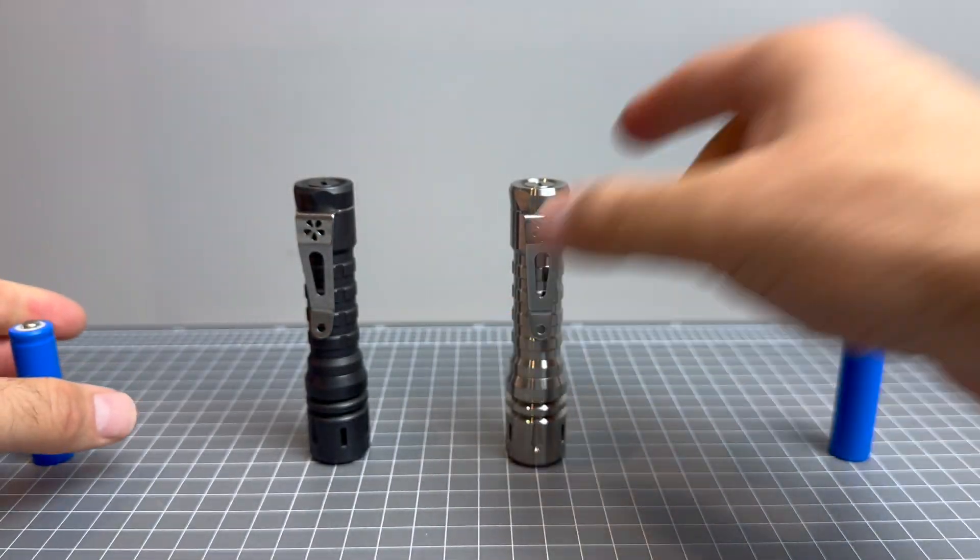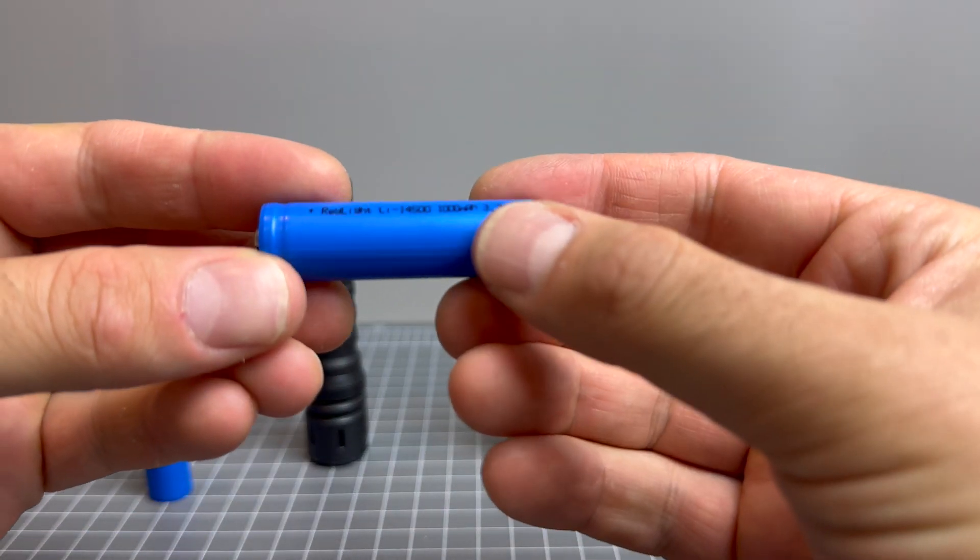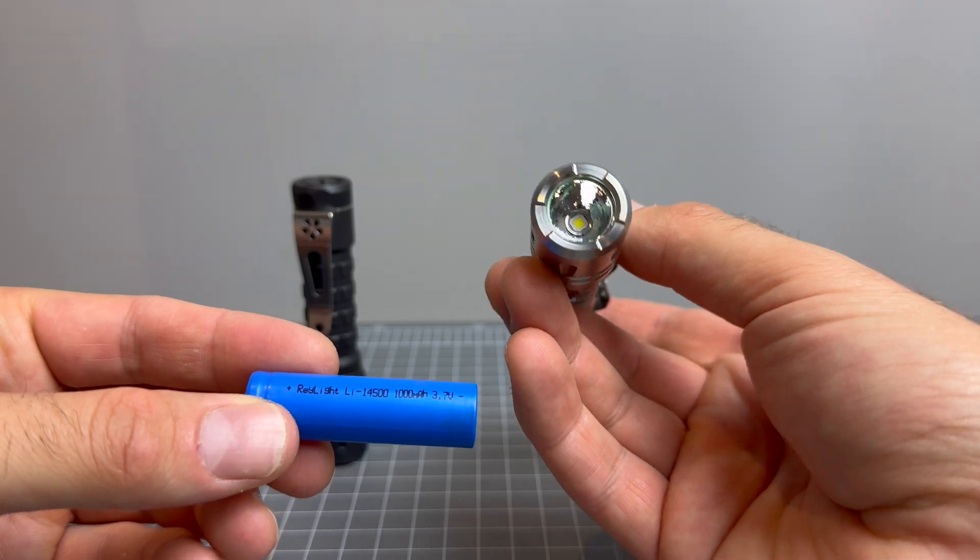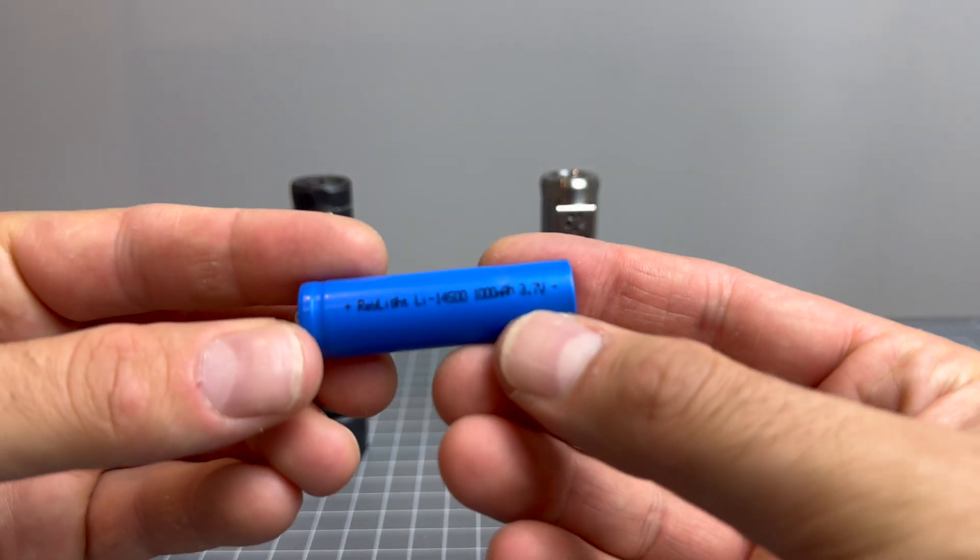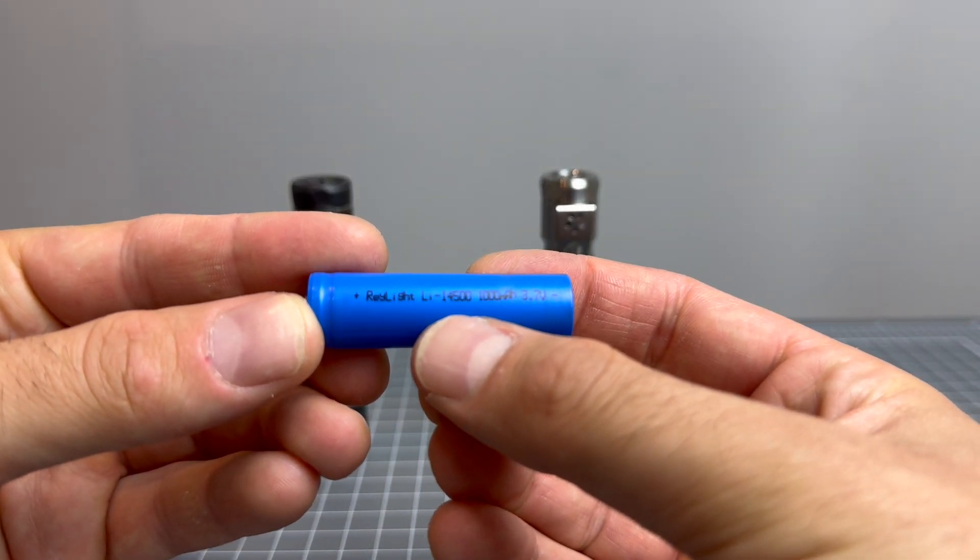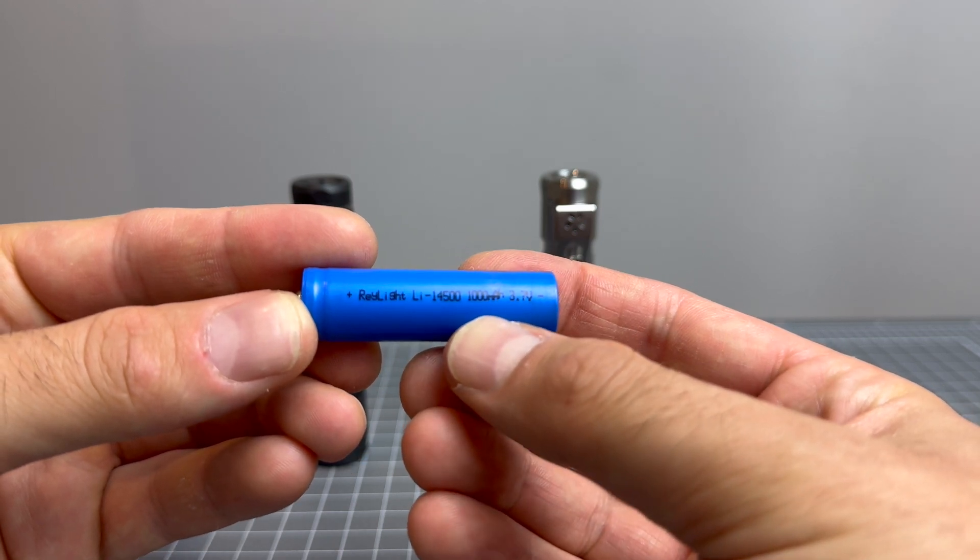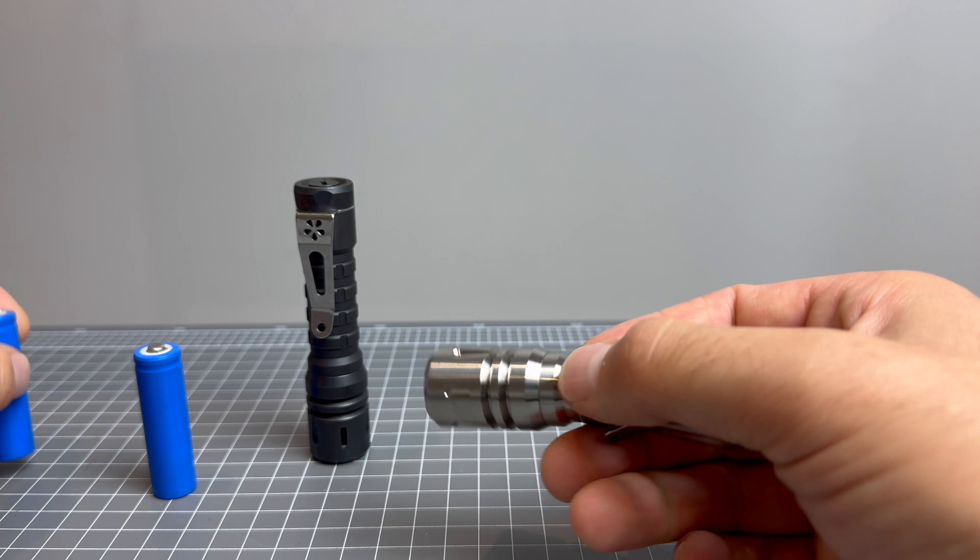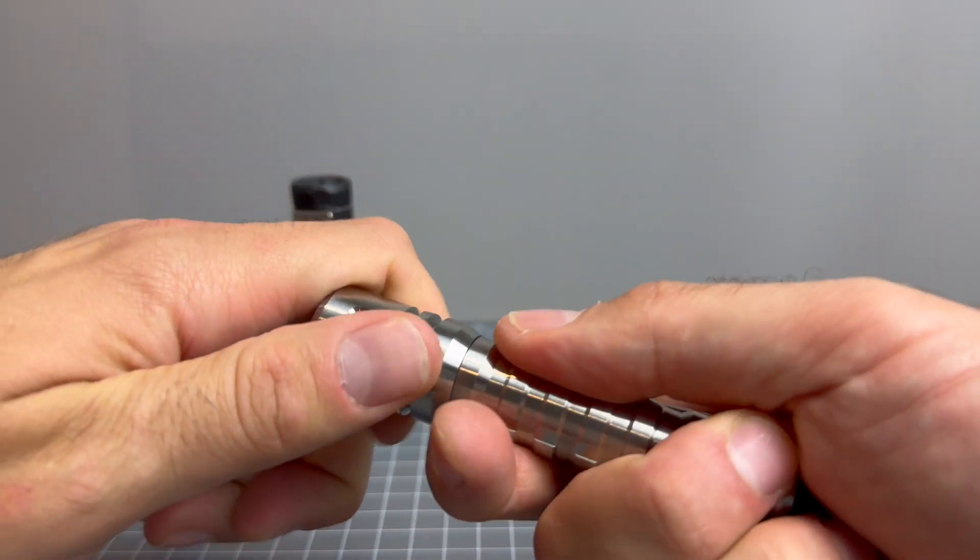Now, before I actually put the batteries in, because these are the XPL high 6,000K emitters, Ray gives you a 3.7 volt, 1000 milliamp hour lithium ion 14,500. So they are unprotected cells.